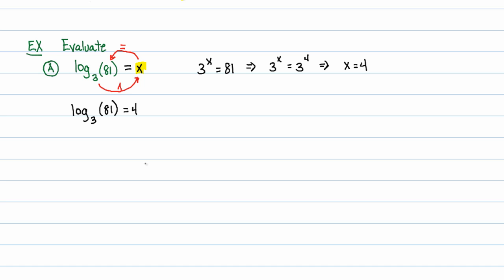That was long-winded because I wanted to show every little step. But really, when I look at this, I just say 3 to what power is 81? By the way, I noticed some handwriting issues — some people might be wondering about the carat symbol. It means 'raised to' on a computer. That's the raised-to symbol I use. All right, let's try another example.